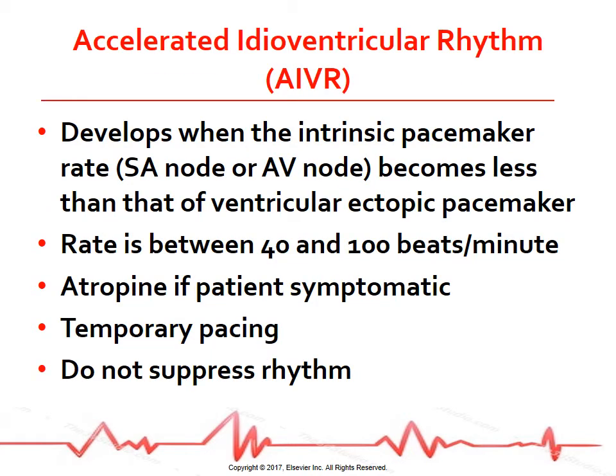An accelerated idioventricular rhythm, AIVR, can develop when the intrinsic pacemaker becomes less than that of the ventricular ectopic pacemaker. The rate is between 40 to 100 beats per minute. It is most commonly associated with acute MI and reperfusion of the myocardium after thrombolytic therapy or percutaneous coronary interventions, and can be seen with digitalis toxicity. In the setting of acute MI, AIVR is usually self-limiting and well-tolerated, requiring no treatment. If the patient becomes symptomatic — hypotensive or has chest pain — atropine can be considered. Temporary pacing may be required. Drugs that suppress ventricular rhythms, like amiodarone, should not be used as these can terminate the ventricular rhythm and further reduce the heart rate.